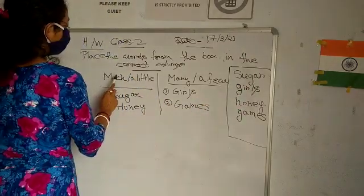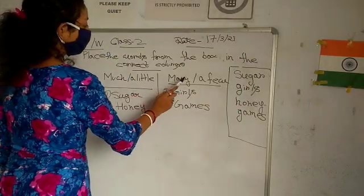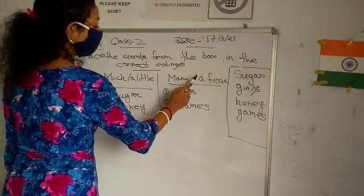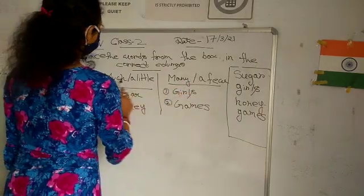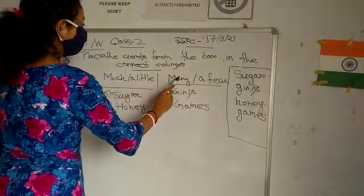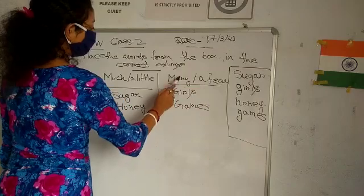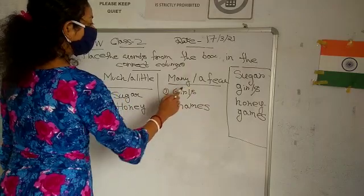Here we have the columns 'much or a little' and 'many or a few'. Girls will go under 'many or a few', so below we have: many girls, a few girls.